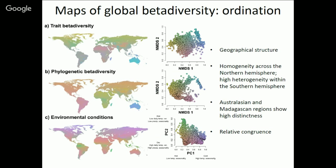I'll show you two kinds of results. One is an ordination: we take these distance matrices, put them into an ordination, get wonderful maps where colors that are more similar have similar species composition. We can also map it in a different way, where a value in a given pixel is the mean turnover to all other cells. These are maps of beta diversity for traits, phylogeny, and environment. The phylogenetic beta diversity map shown here strongly resembles that created by the Wallace project I talked about earlier. There is some geographic structure in beta diversity, a lot of homogeneity across the northern hemisphere, and the Australian and Madagascar regions seem to be quite distinctive.